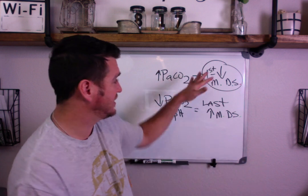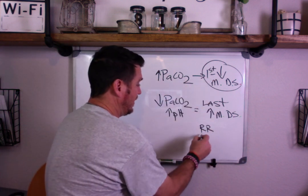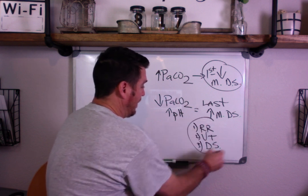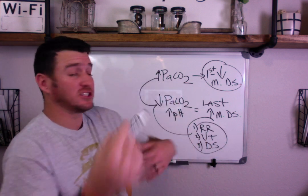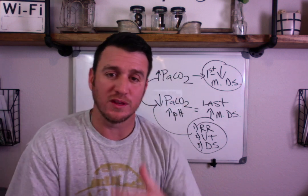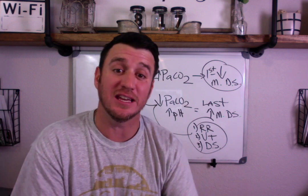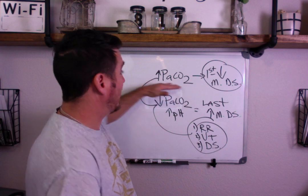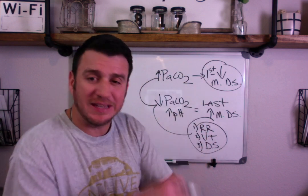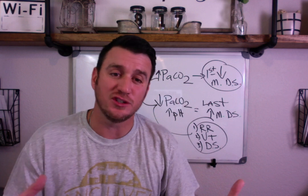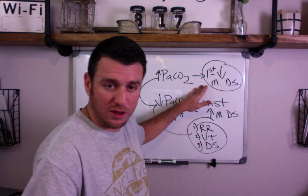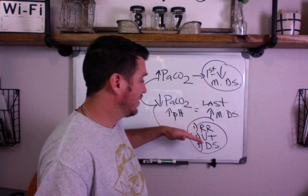When changing CO2, we have three mechanisms: respiratory rate, tidal volume, and mechanical dead space. If you have a high CO2 and a low pH, always start by making sure tidal volume is in the appropriate range. If it is, the first thing you do for a high CO2 is increase respiratory rate. If the question doesn't mention dead space, it's not an issue — but if it states there's excessive mechanical dead space, that's the first thing you address.